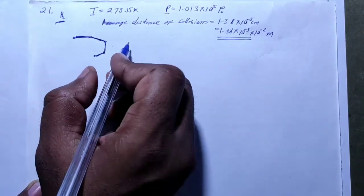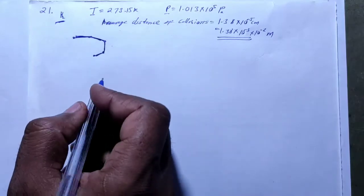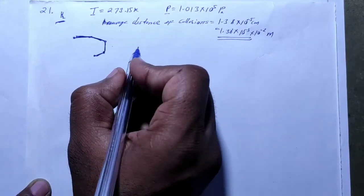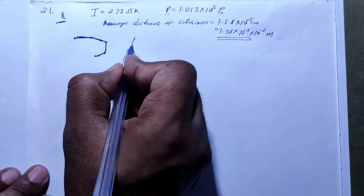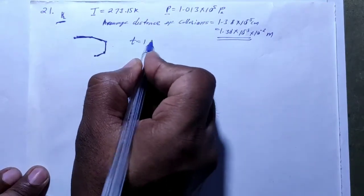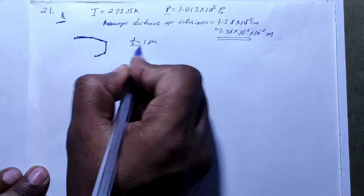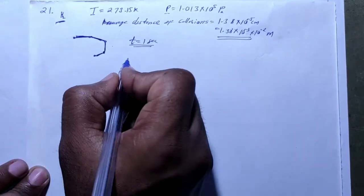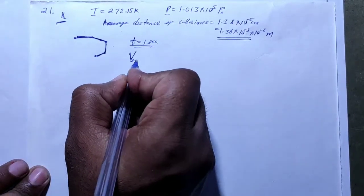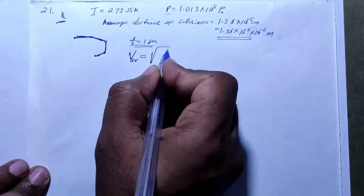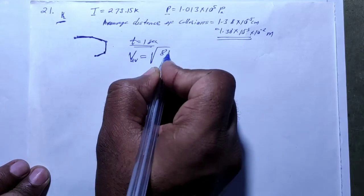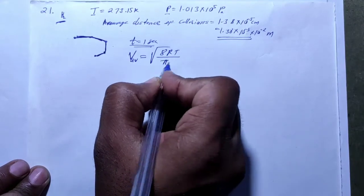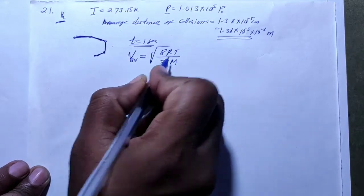Here we can find the path length. To find path length in 1 second of time, we need the average speed. The average speed formula is: v_avg = √(8RT / πM).